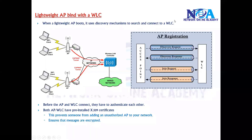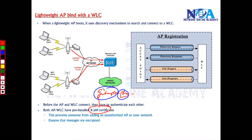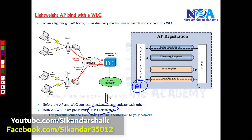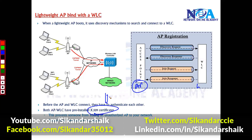For authentication, both devices have pre-installed certificates, which come by default when you purchase the devices. These pre-installed certificates are used to derive the encryption keys required for authentication and encryption. This ensures that all messages exchanged between the access point and the WLC are encrypted, and it also prevents unauthorized access points from connecting to your network through a mutual authentication process.